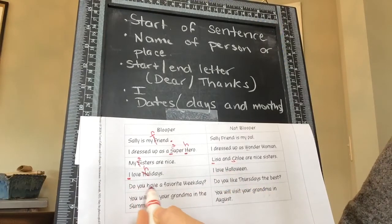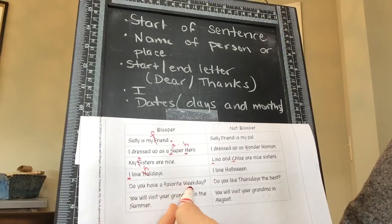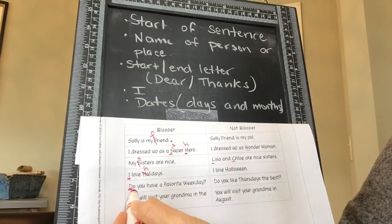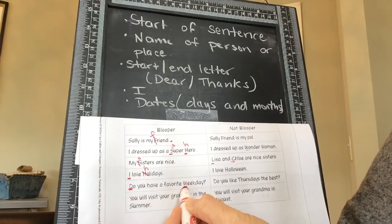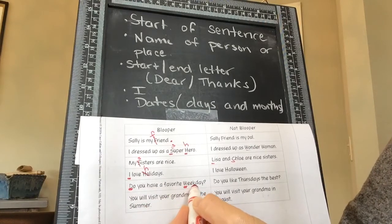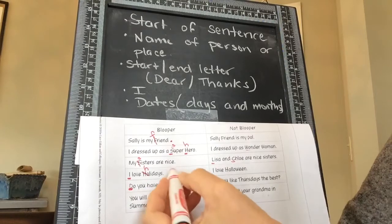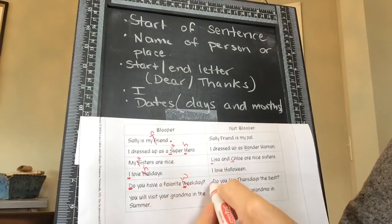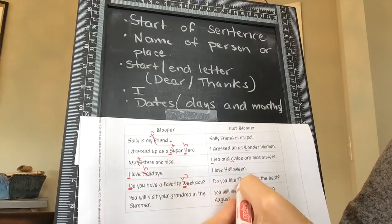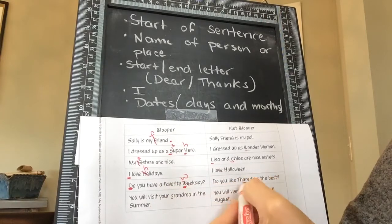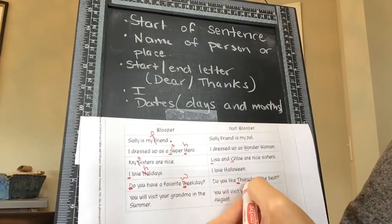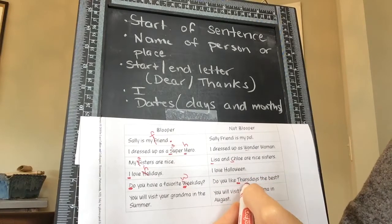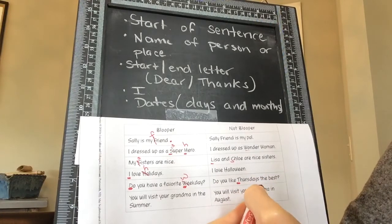Here you have, 'Do you have a favorite Weekday?' D needs to be uppercase because it's the beginning of the sentence. Does W need to be uppercase? No, because that's not giving the name of a weekday — so that should just be a lowercase W for the word 'weekday.' And then 'Do you like Thursdays the best?' They uppercase the T in Thursdays because that is the specific name of a weekday, so that one should be uppercase as the proper name.